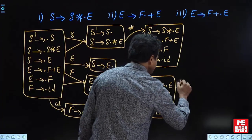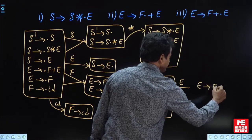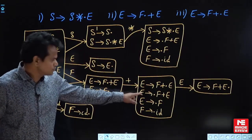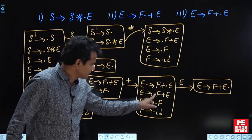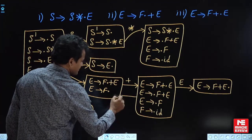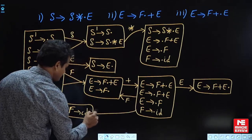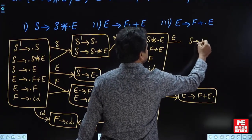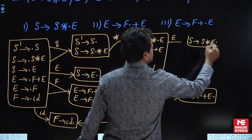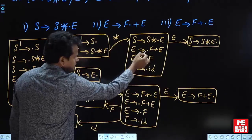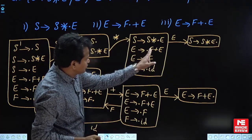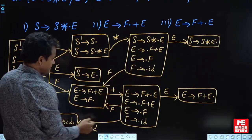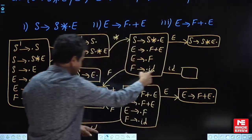If I write the go-to on E: E→F+E·, dot after nothing, close this. Now look at this — these two productions have same shift symbols. Go-to for F·+E and F·, which gives the same state. And for id, the same. On E, S→S·*E — dot after nothing, close this. These two productions have same shift symbols: F·+E and F·, same state. And id — the same.